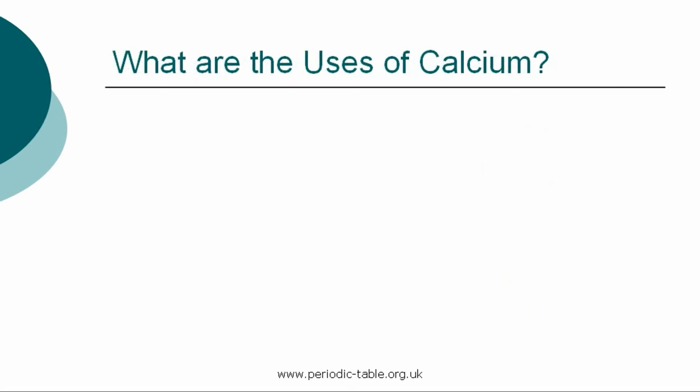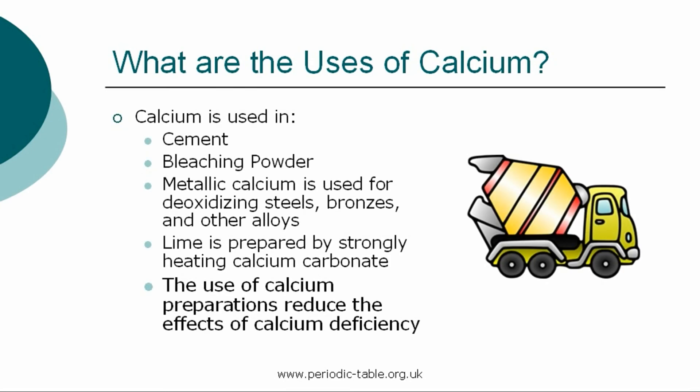Once the properties of an element have been established, we then have the ability to identify how it can be used. Calcium is used in cement and bleaching powder. Metallic calcium is used for deoxidizing steels, bronzes, and other alloys. Lime is prepared by strongly heating calcium carbonate.